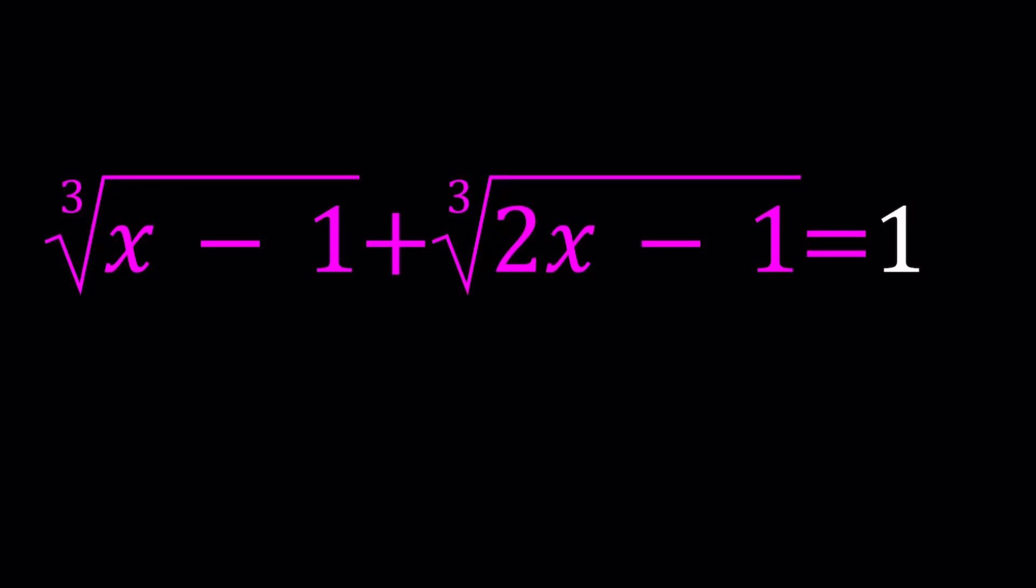Hello everyone. In this video we're going to be solving a radical equation. We have the cube root of x minus 1 plus the cube root of 2x minus 1 and that sum is equal to 1.